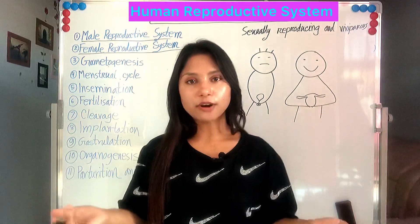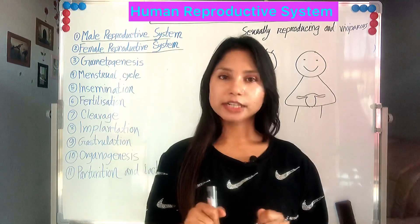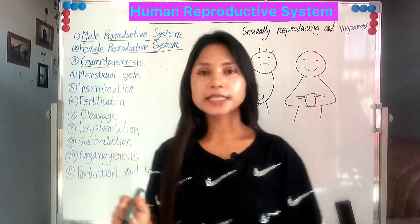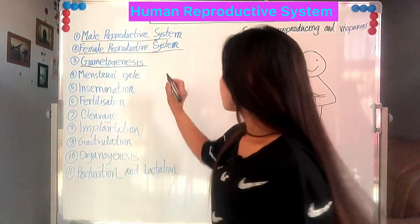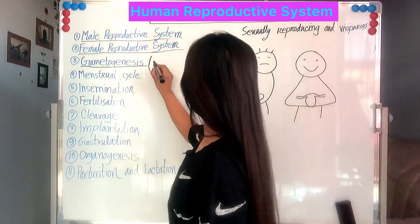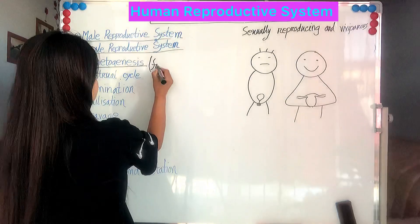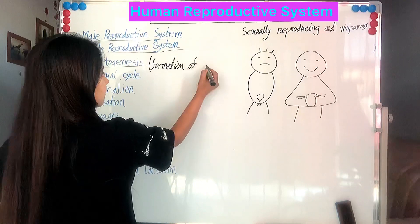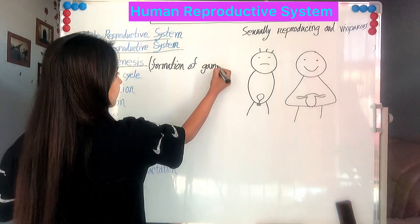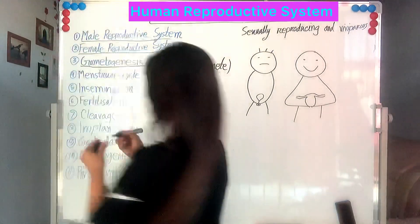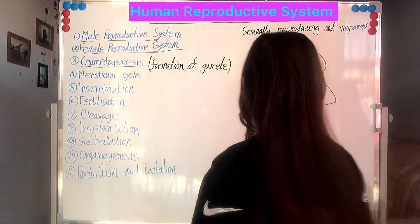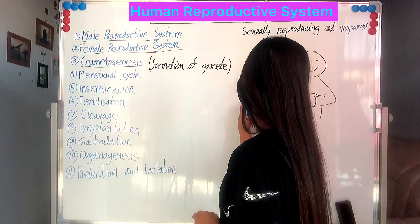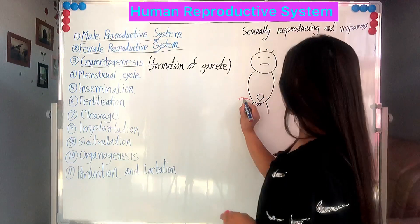After learning the male and female reproductive systems, their organs and structure, we will learn their main function, which is gametogenesis. Gametogenesis means formation of gamete. The male gamete is sperm. If gametogenesis occurs in a male, that is called spermatogenesis — formation of sperm.